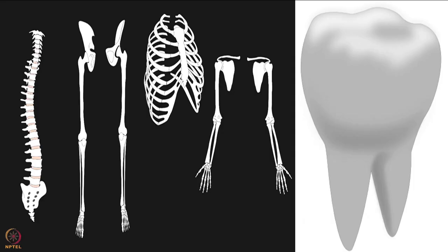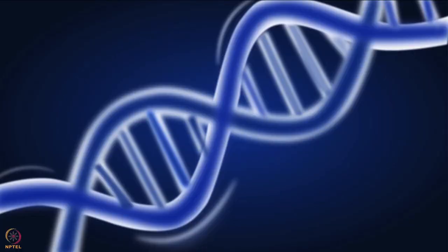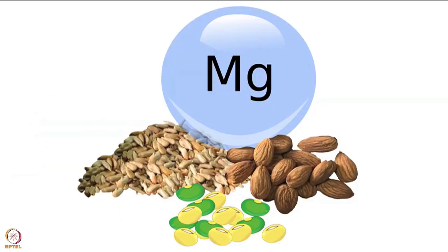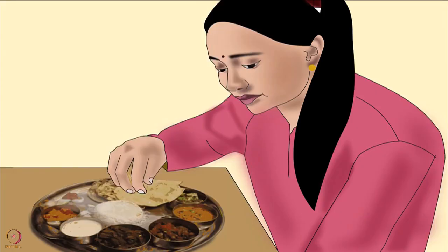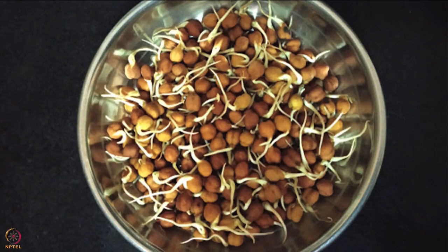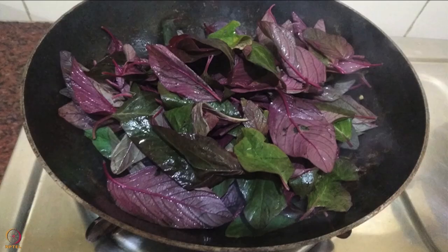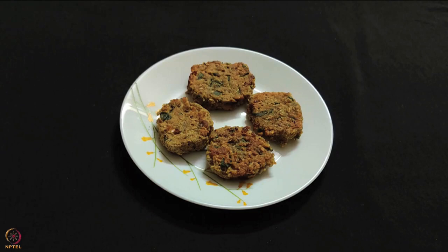Magnesium is required for healthy bones and teeth as well. We also need magnesium for energy production and DNA synthesis. Magnesium is present in beans, nuts, seeds, leafy vegetables, and grains. Intake of magnesium and its absorption in the body are both equally important. Fermentation, roasting, germination, and cooking improve absorption. Soaking beans before cooking also does the same. Now let us see the preparation of our first recipe: sprouted moth beans cutlet.